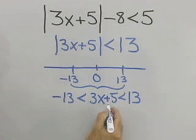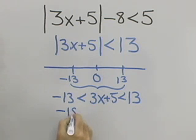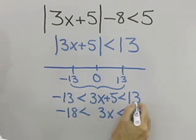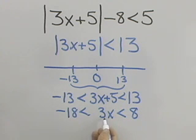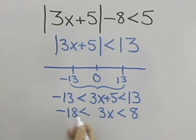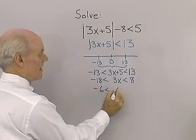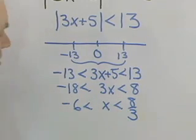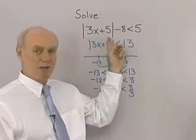Adding negative 5 to each of the three expressions gives negative 18 less than 3x less than 8. Dividing the center expression by 3 and doing the same to the outside expressions, I get negative 6 less than x less than 8 thirds. This continued inequality is the solution to the absolute value inequality.